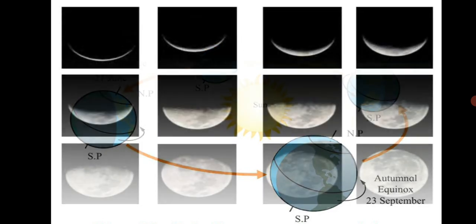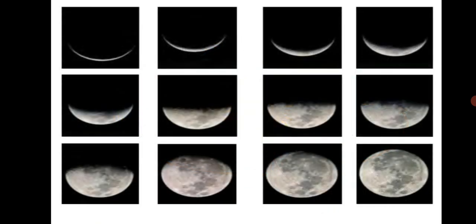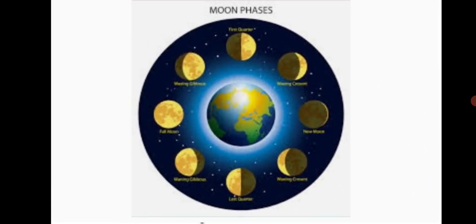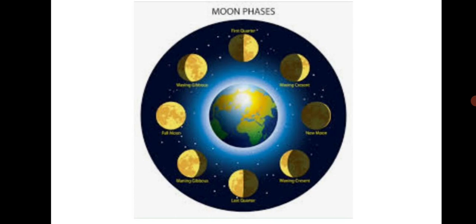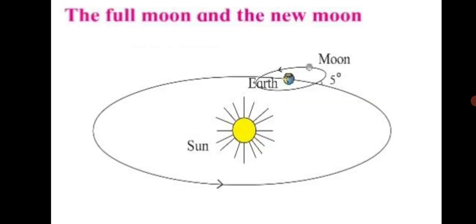Can you tell me what is the name given to the changing shapes of the moon that we see? They are called the phases of the moon. Can you tell me what are the names of the days on which we see a full moon — a round moon? That is called a full moon day. And when we do not see any moon at all, it is called new moon day. Let's learn about the full moon and the new moon.